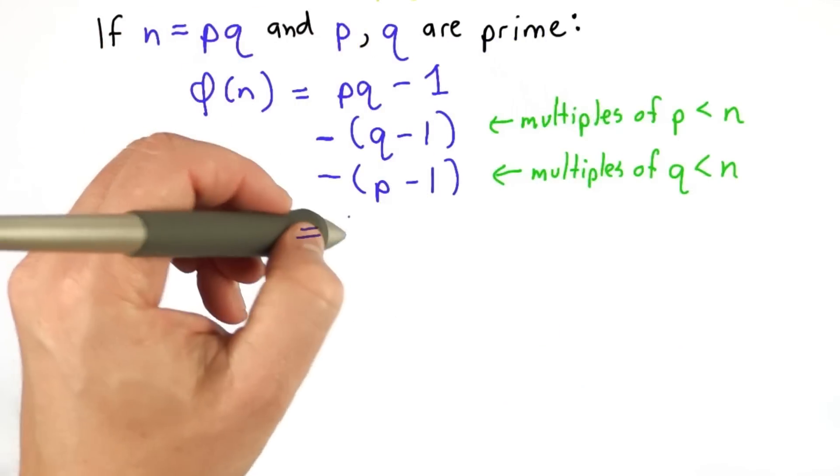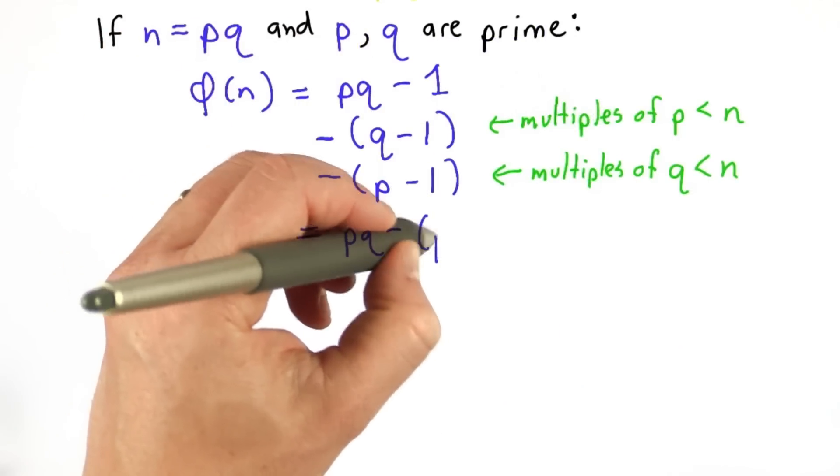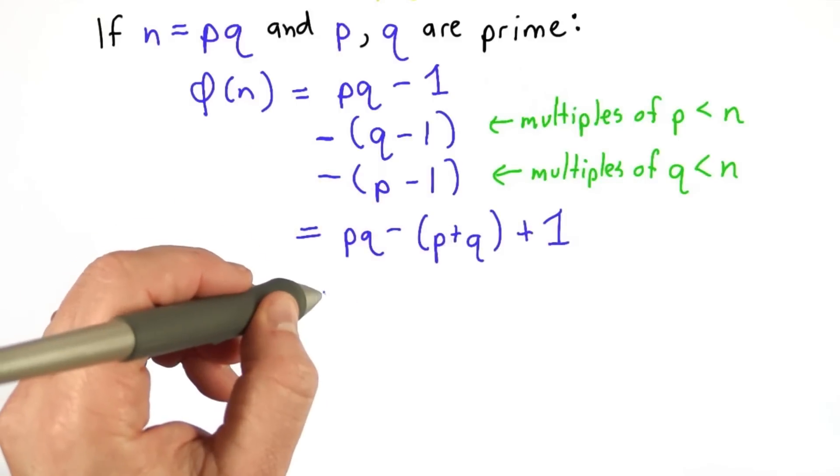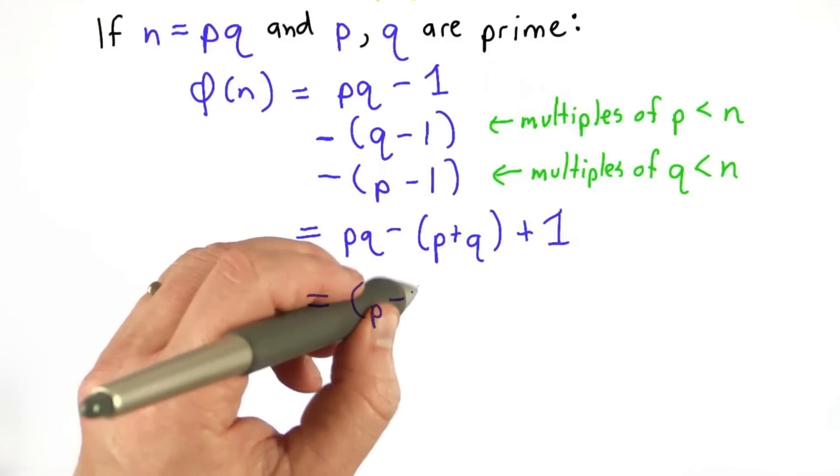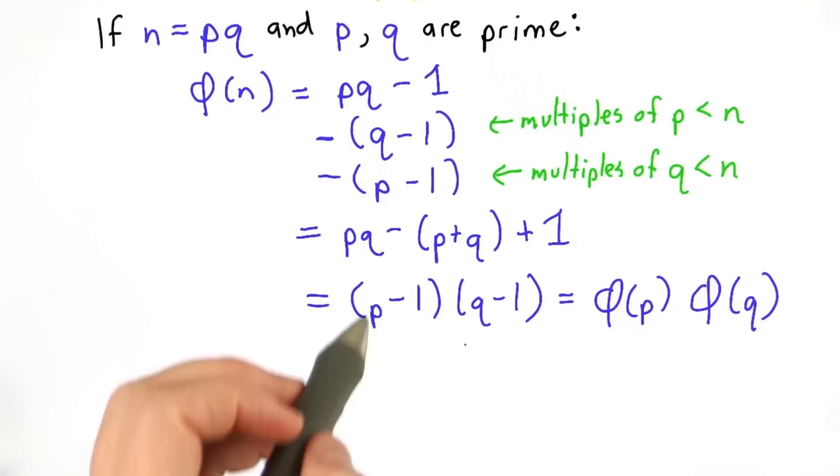If we do the algebra, we get pq minus p plus q plus 1, which we can also write as (p-1) times (q-1). And since p and q are prime,